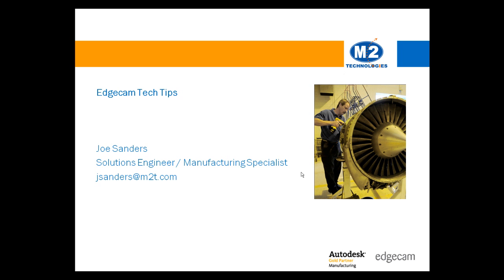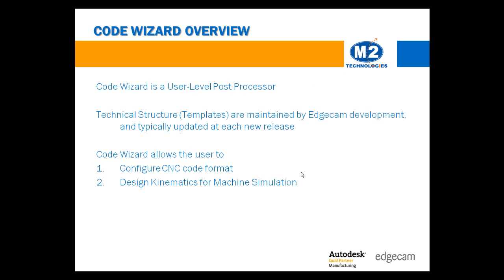Edgecam is one of the software tools that we use to help our customers produce high-quality finished products faster and at lower cost. Edgecam's CodeWizard provides the average end-user with the ability to manage post-processors. Every CodeWizard file begins as a template, which is part of the Edgecam installation. The CodeWizard allows the user or post-processor developer a high degree of control over the CNC code output by modifying the settings available in the underlying template.